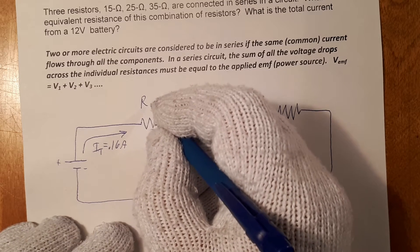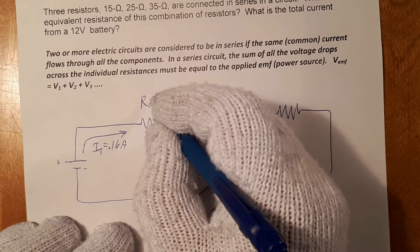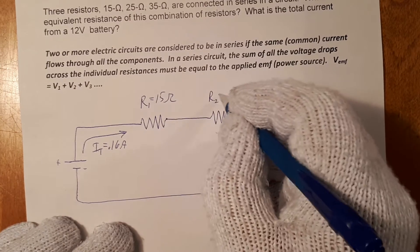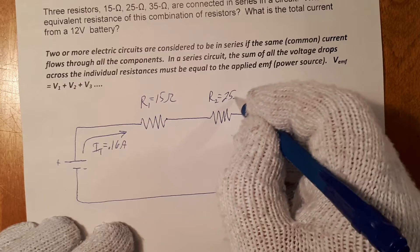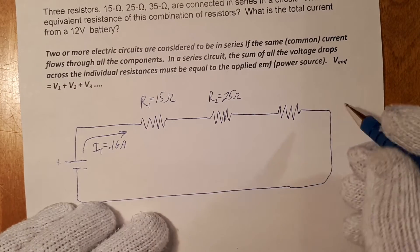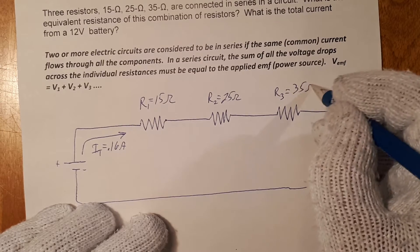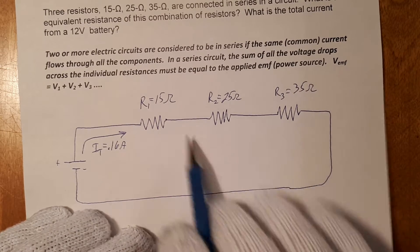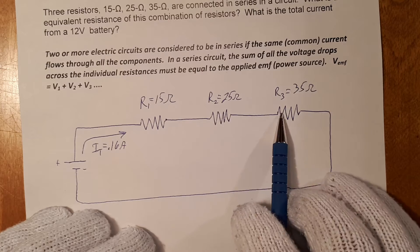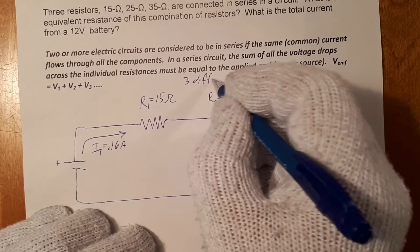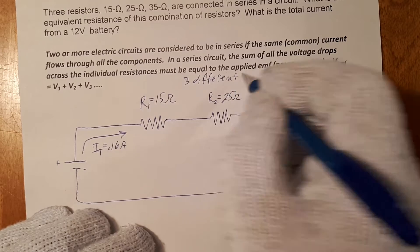Let's give these some values. Resistance of this one here, we'll call that R1 is equal to 15 ohms. And R2 will make this one 25 ohms. And R3 will make this one 35 ohms. You can consider these to be three light bulbs, three different light bulbs. It's a better way to think about this.